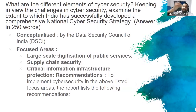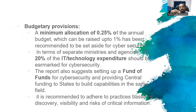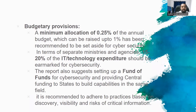We have supply chain security concerns — we are importing chips and systems from China, and there are concerns that backdoors are being used to extract information. How do we protect our critical infrastructure? The document says our expenditure is not enough — we should allocate at least 0.25% of the annual budget, raised over time, and 20% of each ministry's IT budget should go to security purposes.